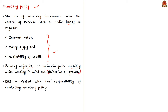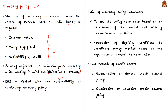As per the RBI Act of 1934, the Reserve Bank of India is vested with the responsibility of conducting monetary policy. RBI states that price stability is a necessary precondition to sustain the growth rates. The monetary policy framework aims at setting the policy rates based on an assessment of the current and evolving macroeconomic situation. It also aims at modulation of liquidity conditions to coordinate money market rates at or around the repo rate.